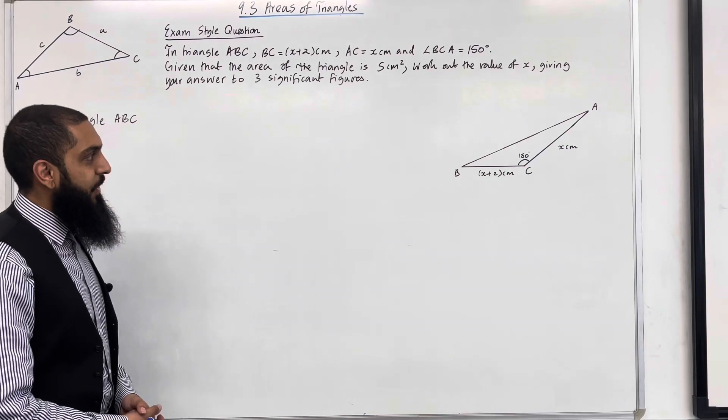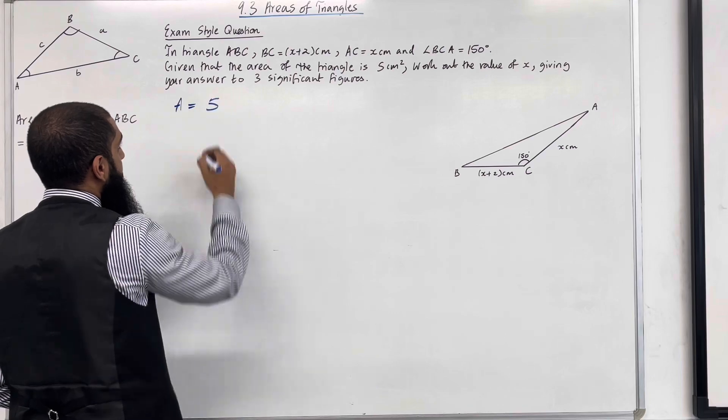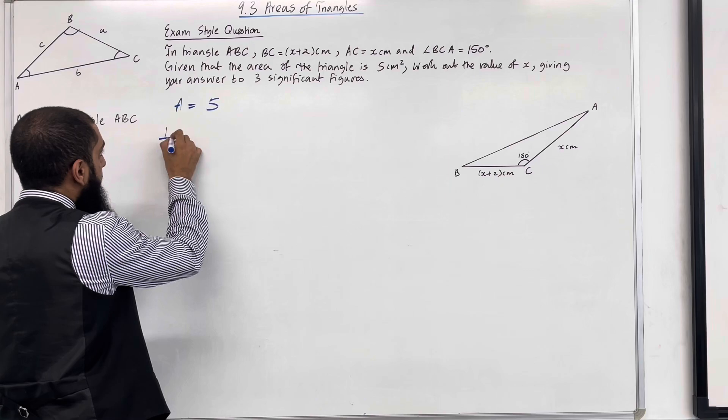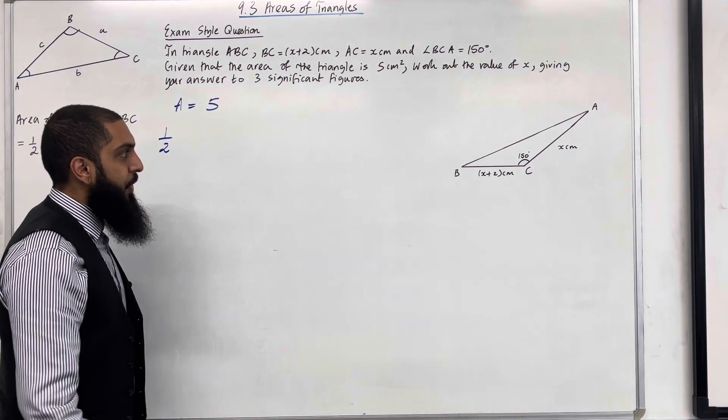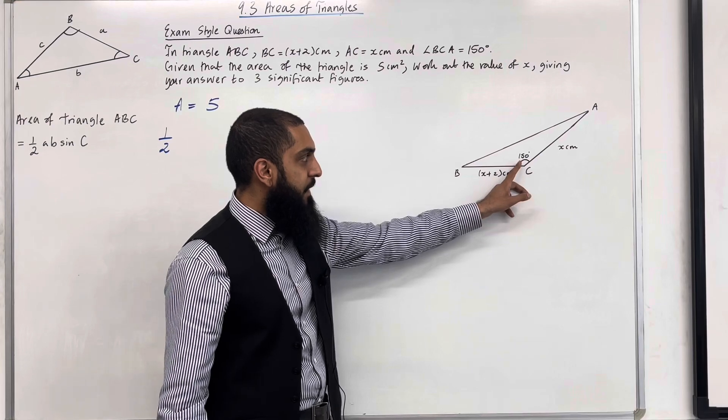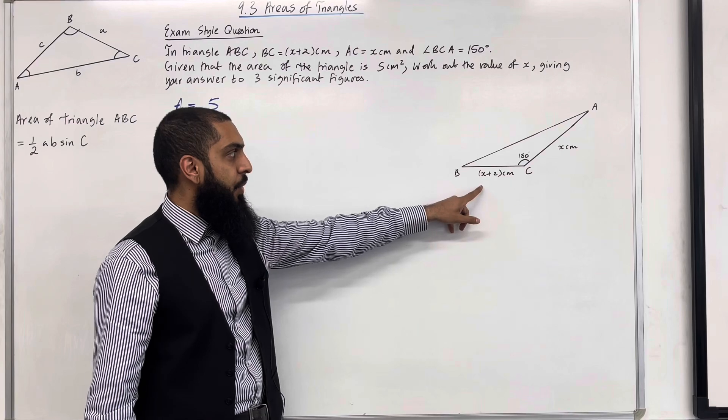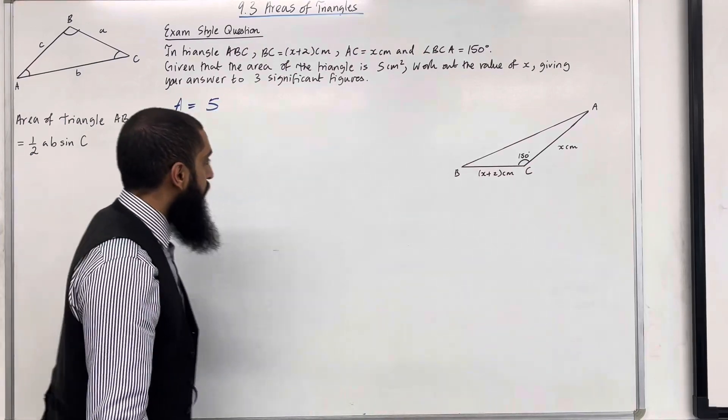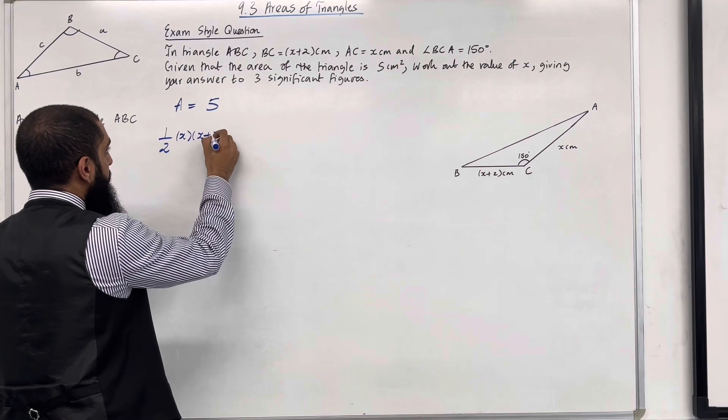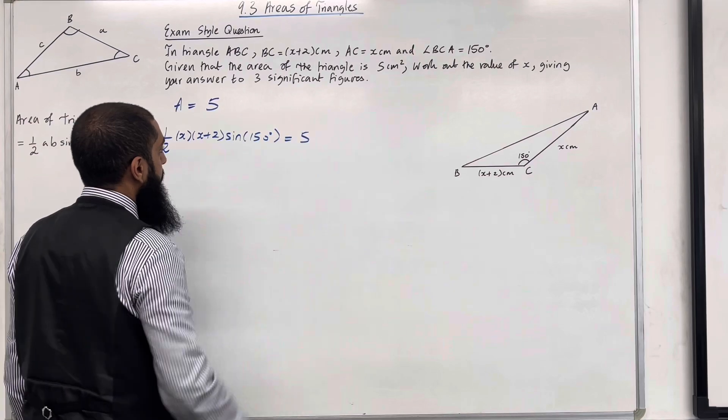Okay, so we know that the area A is equal to 5 cm squared. Now to work out the area A, we have to apply the formula a half AB sine C. So A and B is basically the two sides that create the angle 150 degrees. So the A we can take it to be x and the B we can take it to be x plus 2 or vice versa. So we've got a half multiplied by x, multiplied by x plus 2, sine of 150 degrees. This must equal to 5.